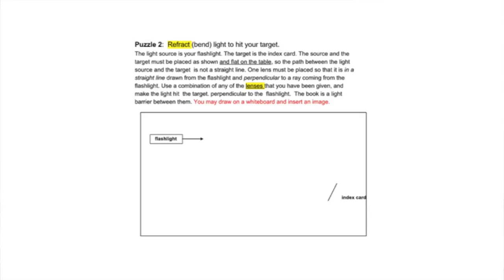Puzzle number two requires that you use the internet to see how convex and concave lenses redirect light. You are to place one of each lens in the pathway of the beam of light coming from the flashlight so that the lens is focused onto the index card.